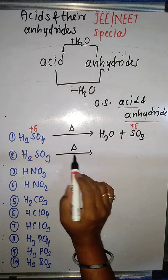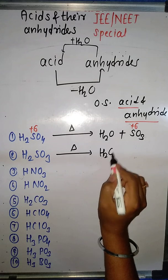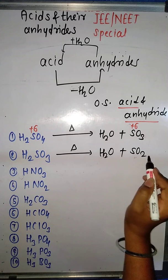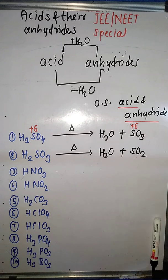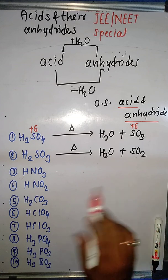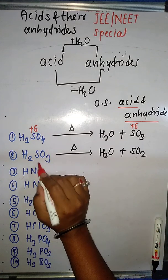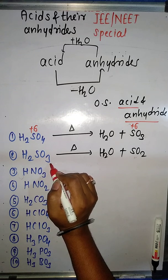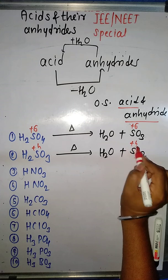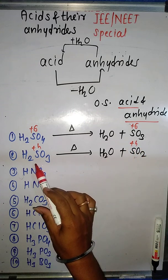The next example is H₂SO₃. To find its anhydride, remove the water molecule: H₂O is removed and what's left is SO₂. Checking the oxidation state, sulfur in H₂SO₃ is +4, and in SO₂ it is also +4. So sulfur dioxide is the anhydride of sulfurous acid.